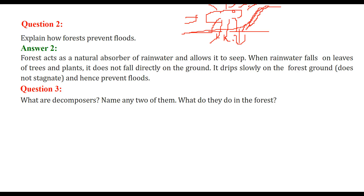When there is no tree and water comes, it will just flow, taking away the important upper layer of soil. But if the tree is there, it will stop the water. The prevention of flood is a major task of trees, whose roots bind the soil.